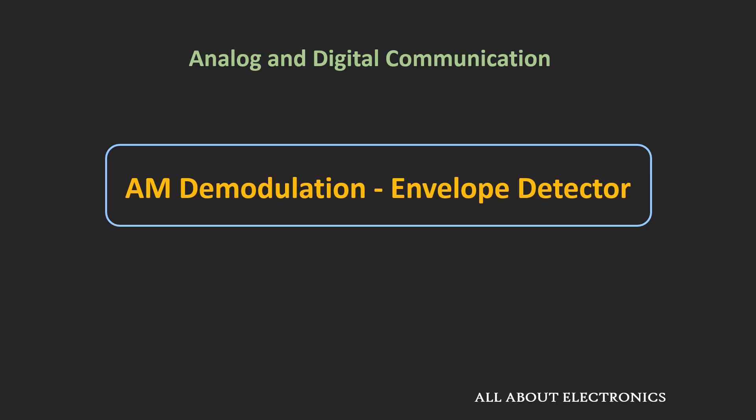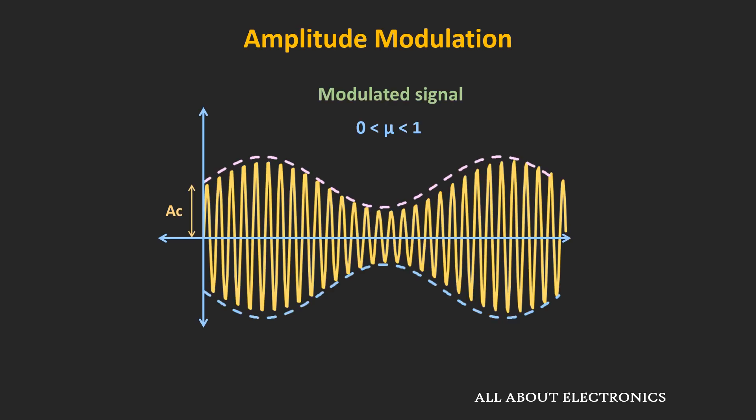Hey friends, welcome to the YouTube channel All About Electronics. In the previous videos on amplitude modulation, we understood what AM is and how the AM signal can be generated using various methods. In this video, let us see one of the most widely used demodulation techniques for the AM signal. This envelope detector is a non-coherent type demodulation technique, meaning the carrier signal is not required at the receiver end.